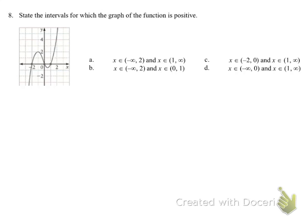State the intervals where the graph is positive. First, let's find all the parts on the graph that are positive — there's this part and that part right there. Looking through all the answer choices, we're looking from negative two to zero and from one to positive infinity, and that's what option C describes.